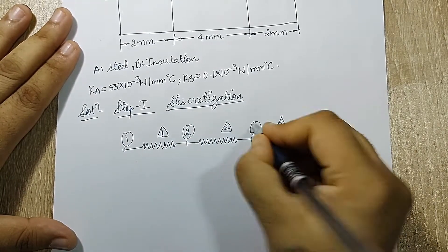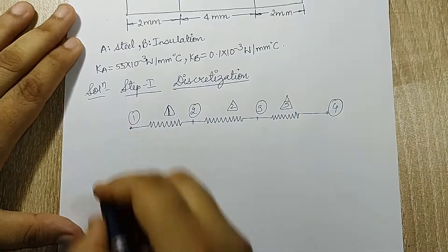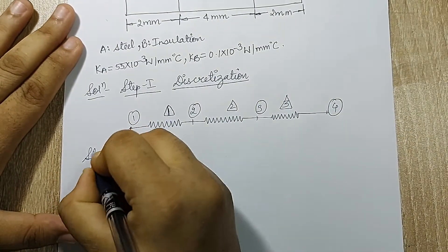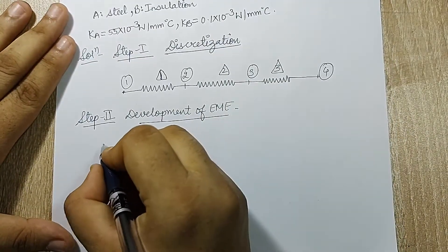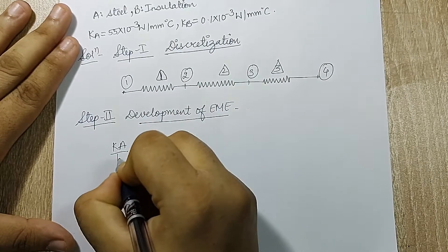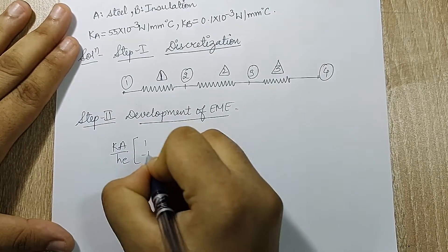Next I will go to step 2, that is the development of EME. The EME for this type of question will be k*A upon h_e times [1, -1; -1, 1].